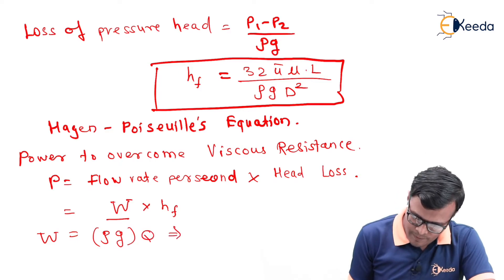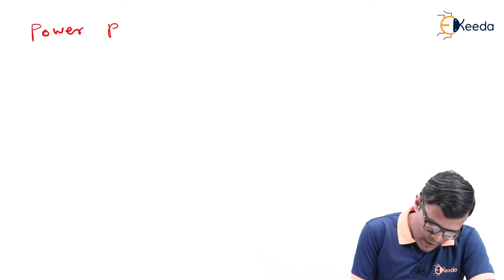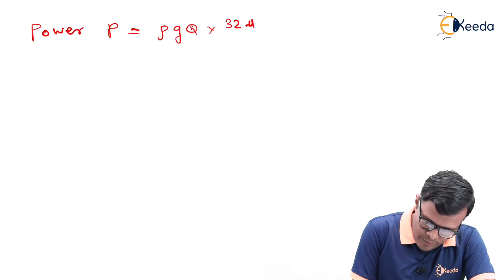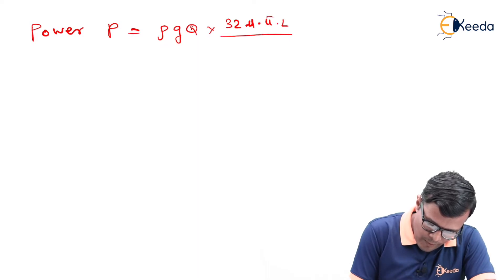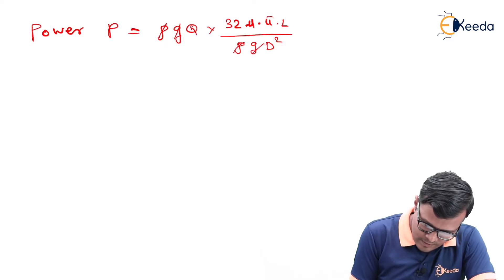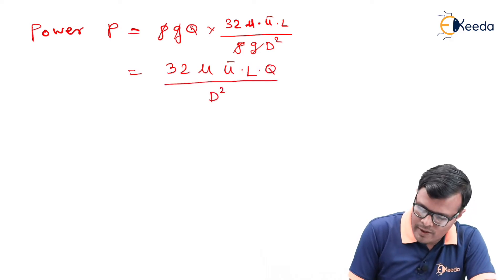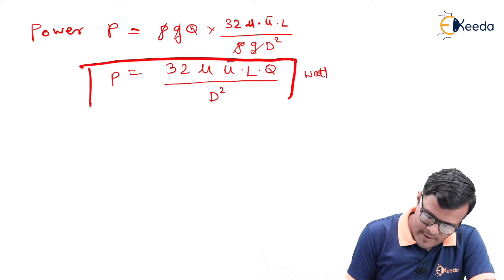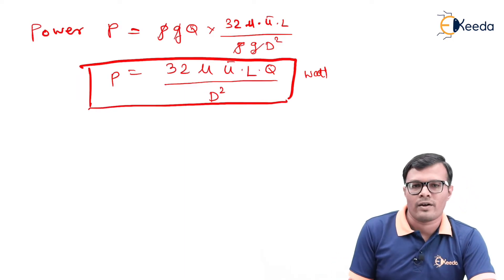It becomes power P is equal to rho g into 32 mu into u bar into L upon rho g d square. Here this rho g term will get cancelled and the formula will become 32 mu u bar into L into Q divided by d square. And the unit of this power will be in Watt obviously. This is the basic relation to calculate power required for a particular flow.